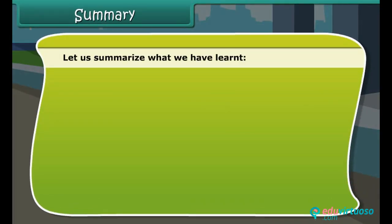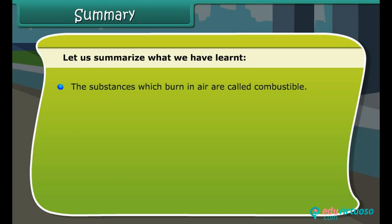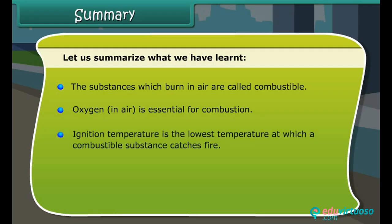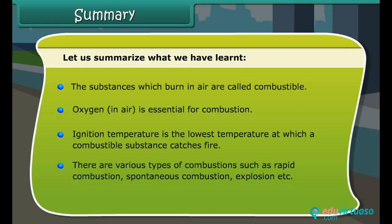Let us summarize what we have learned. Substances which burn in air are called combustible. Oxygen in air is essential for combustion. Ignition temperature is the lowest temperature at which a combustible substance catches fire. There are various types of combustion such as rapid combustion, spontaneous combustion, explosion, etc.